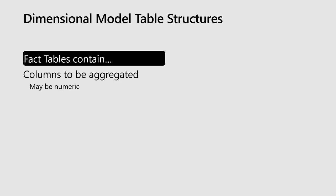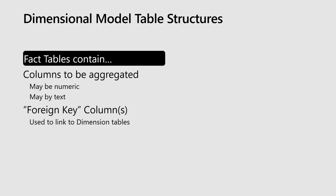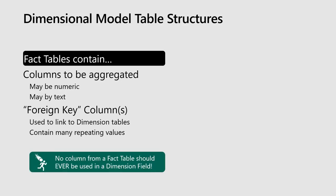There are a couple of other things you want to know about structures. Fact tables contain columns which need to be aggregated — these could be numeric or text, since sometimes we count things. They also contain foreign key columns — columns with multiple different values that we use to link to the dimensional tables — and they contain many repeating values. The key thing is that once you've got a field you're going to drag into the bottom right-hand corner, that makes it a fact table. You should never be using one of those fields to slice your rows and columns.